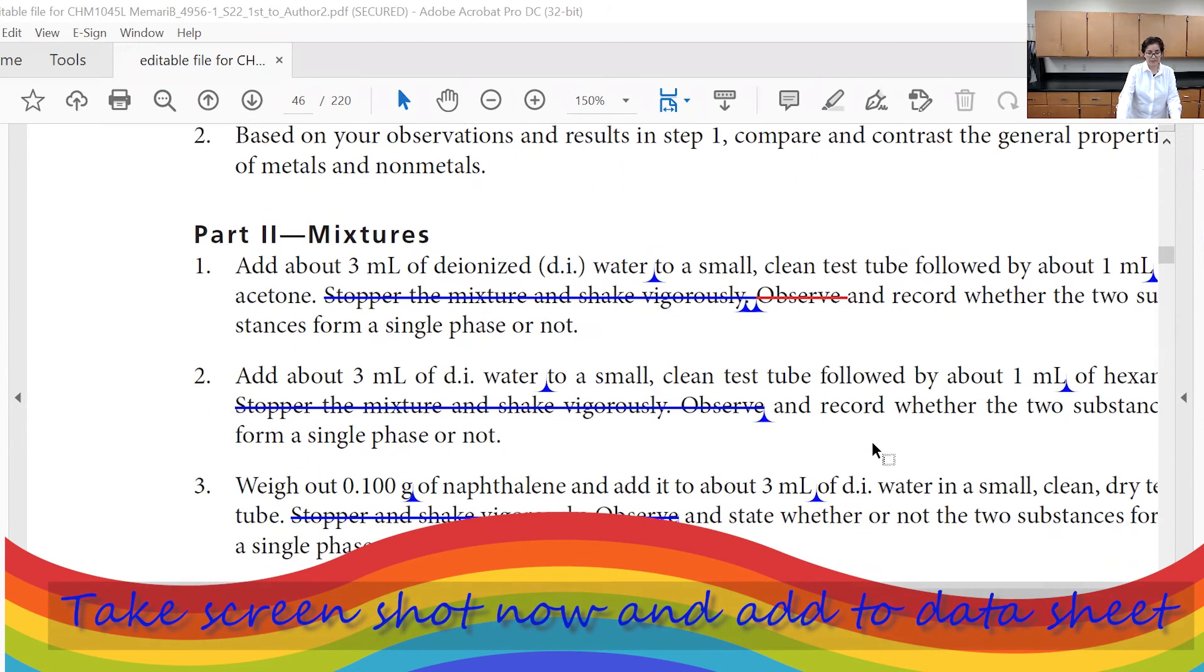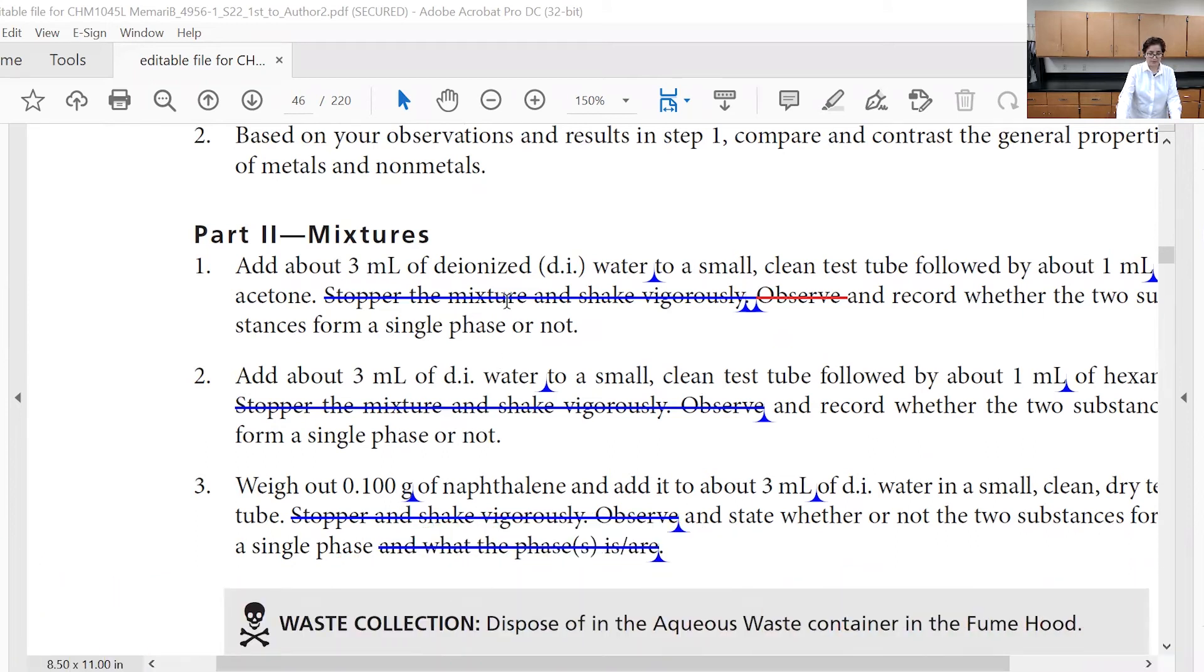With mixing of the chemicals, you would see if they are going to be one layer or if the two chemicals are miscible, they would give one layer. But if they are not miscible, they would give two separate layers or two phases. And that is going to be classified as a heterogeneous mixture or not soluble.